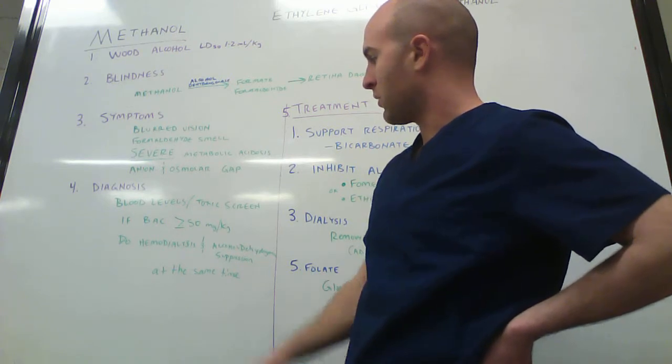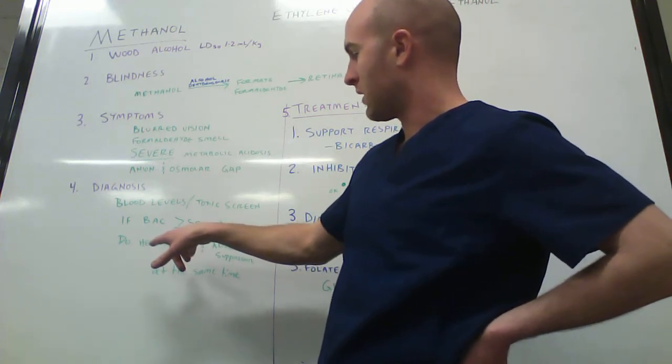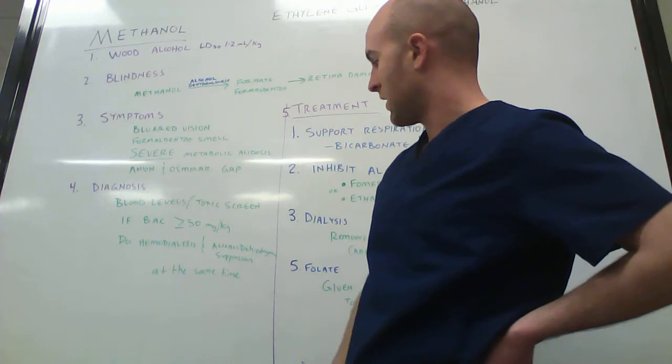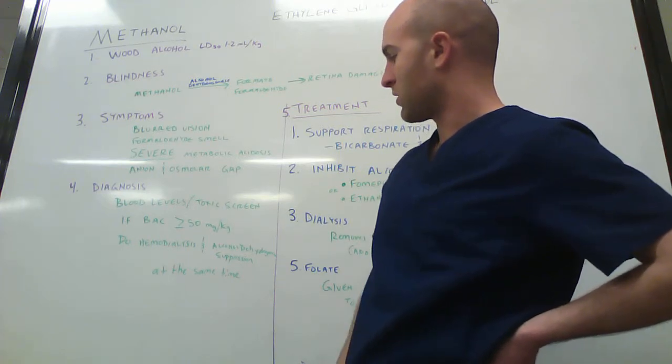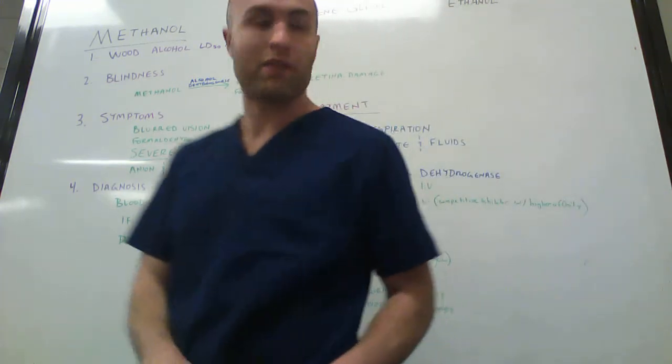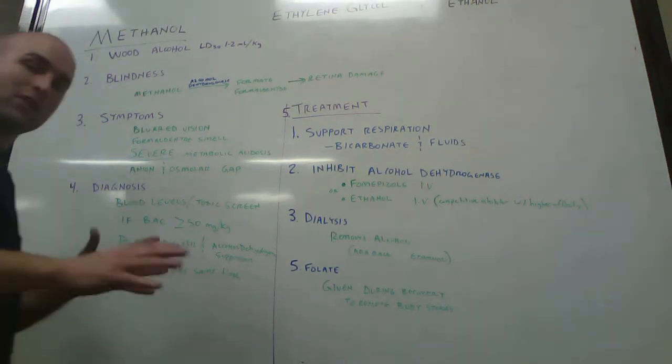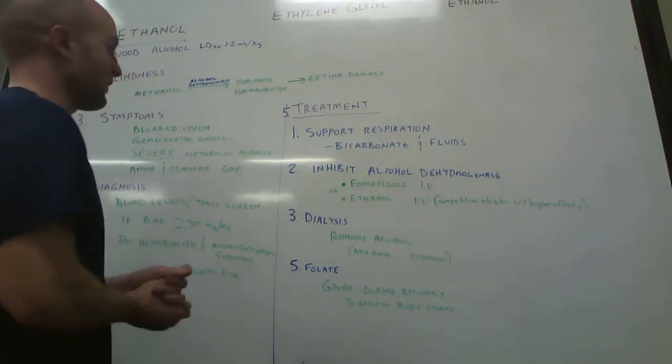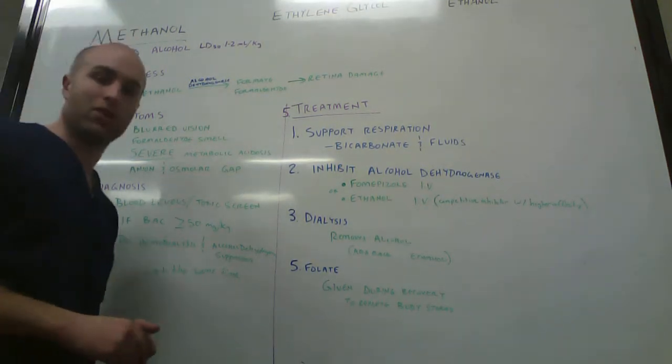If the blood alcohol levels were greater than 50 milligrams per kilogram, then you're going to want to do hemodialysis and alcohol dehydrogenase suppression at the same time. The first thing that you're going to want to do if you find out this person has methanol poisoning is support respiration.